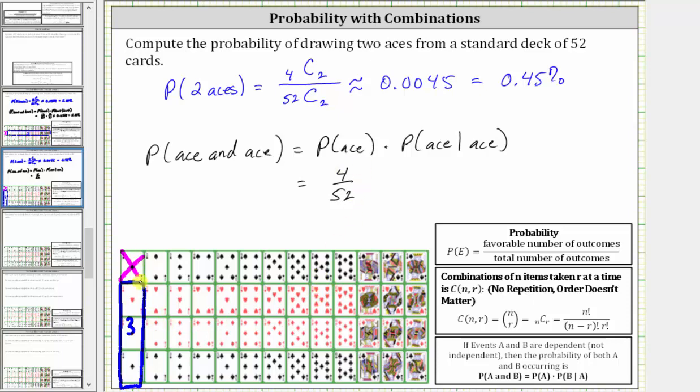Again, because this card is not replaced back into the deck. Therefore the probability of drawing an ace, given an ace has already been drawn, is three 51st or three divided by 51.